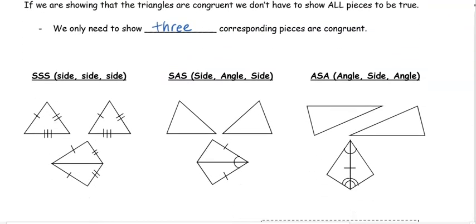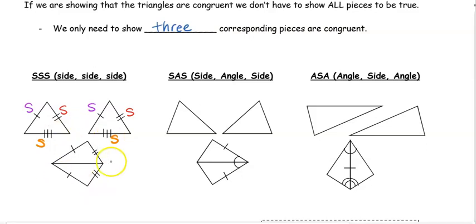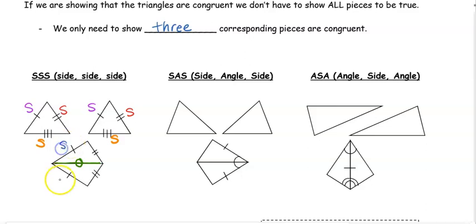The first method of proving triangles congruent is Side-Side-Side (SSS): three sets of corresponding congruent sides. The second example of SSS involves a shared side. When two triangles share a side, we know that side is congruent because of the reflexive property — it's congruent to itself. So that gives us side, side, and side — three sets of corresponding congruent sides.